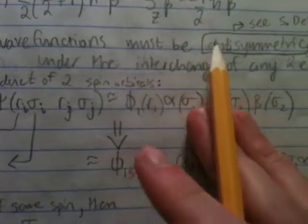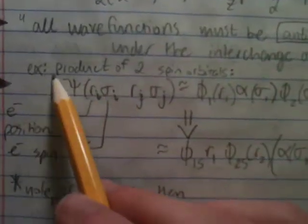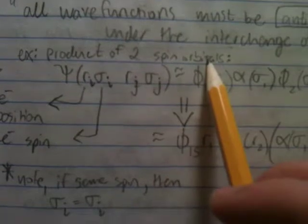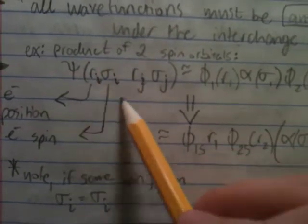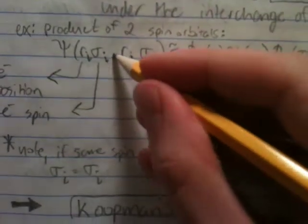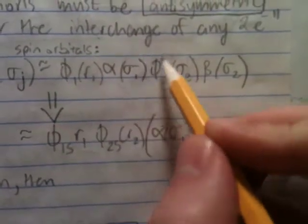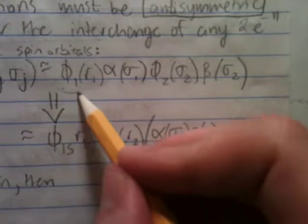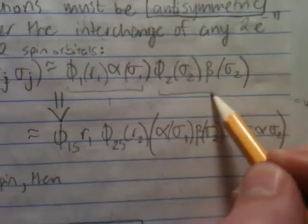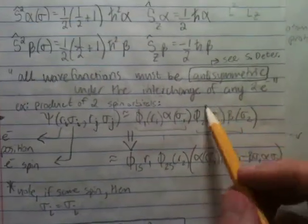So for example, if you have the product of two spin orbitals, where this is one spin orbital and this is another spin orbital, for this overall function the interaction is these two being multiplied.